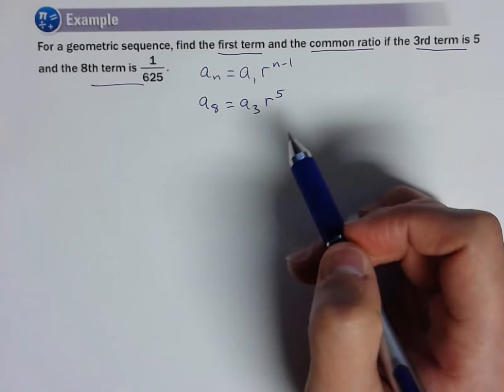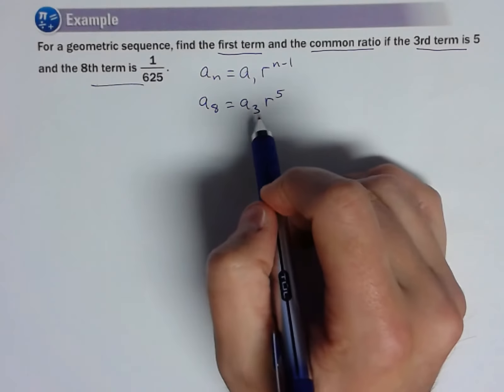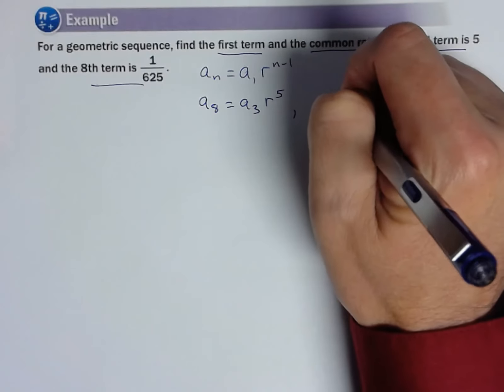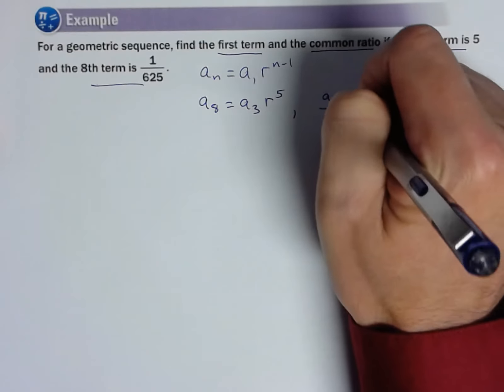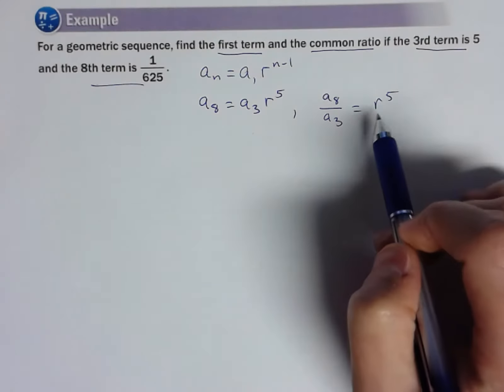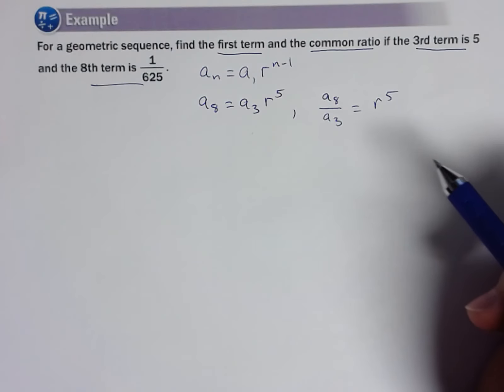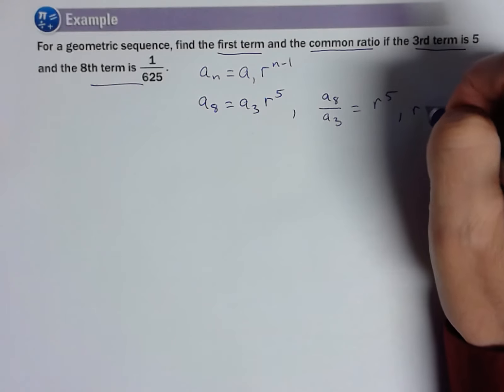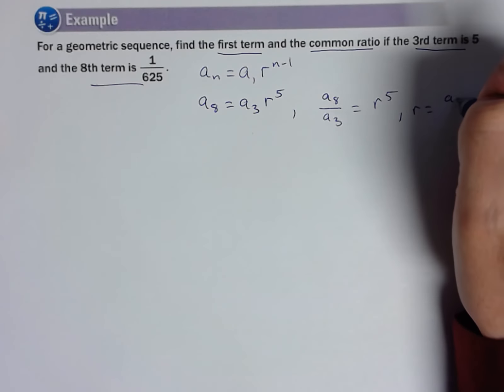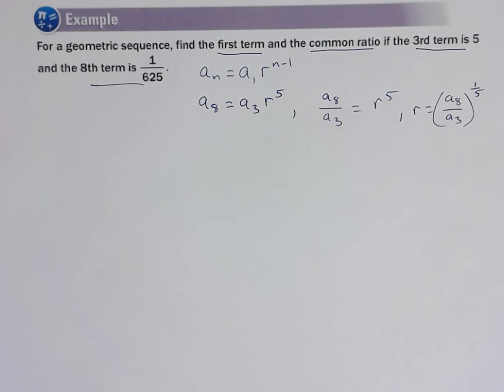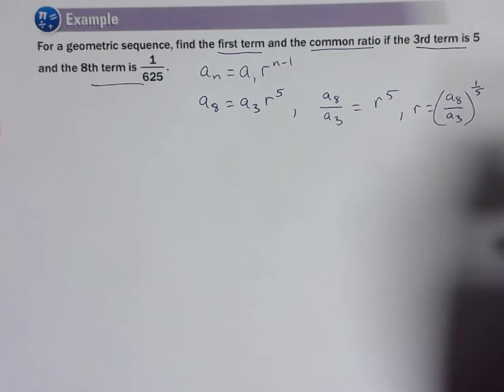Well, now we can solve for R. Let's go ahead and do that. In fact, let me just solve this real general here. If I divided my eighth over three, so eighth term over third term would equal R to the fifth. And then to get R, of course, you would do the fifth root of both sides. And so R would equal eighth term divided by third term, fifth root of that. I'm going to write it to the one-fifth power. That's how I'm going to put it in my calculator.